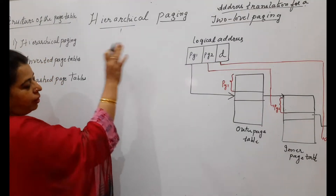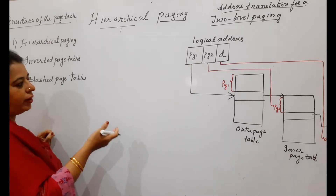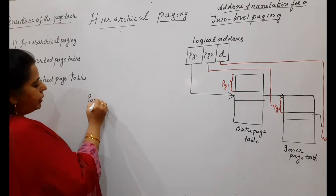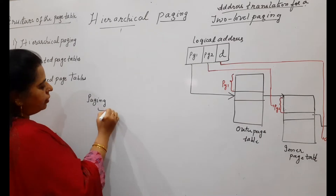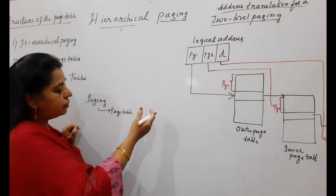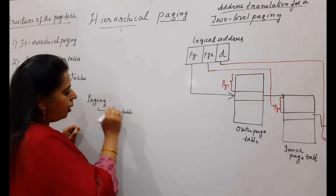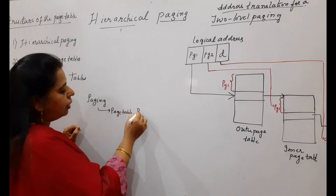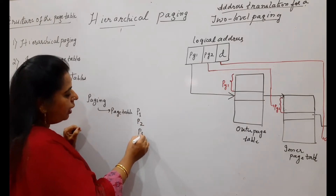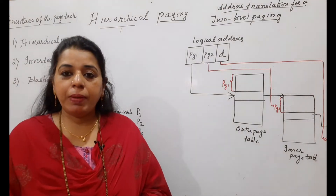At any point of time, in the previous concepts of paging or segmentation, you have learned that you have to maintain a page table. In paging, you maintain a page table, which stores all the page numbers of a process and the frame number in which that particular page is stored in the physical memory. There will be a page table for every process.